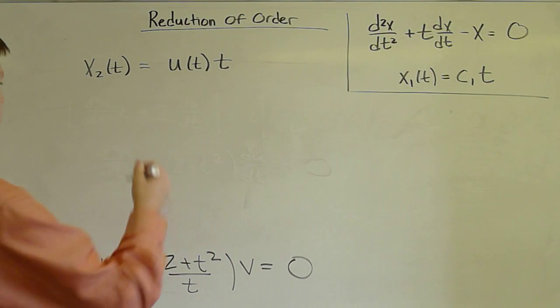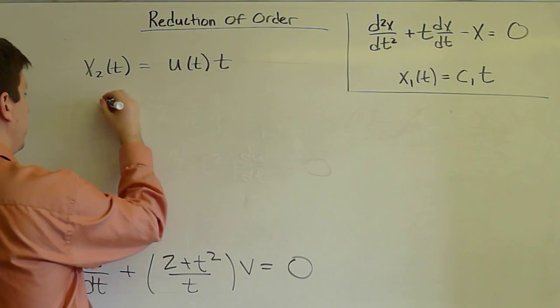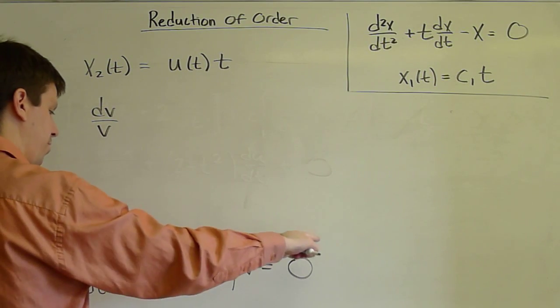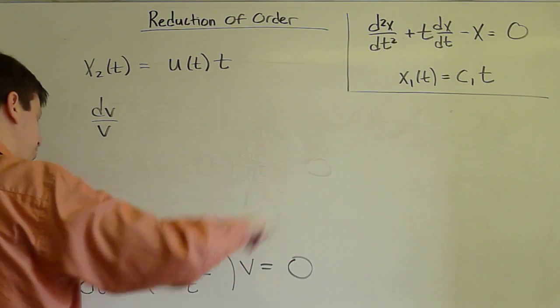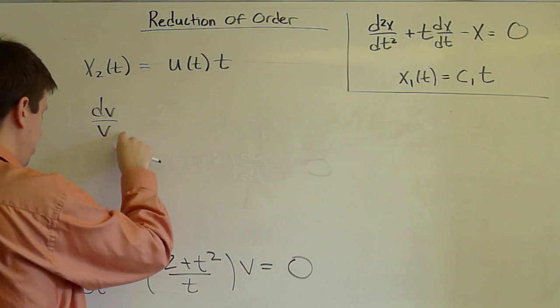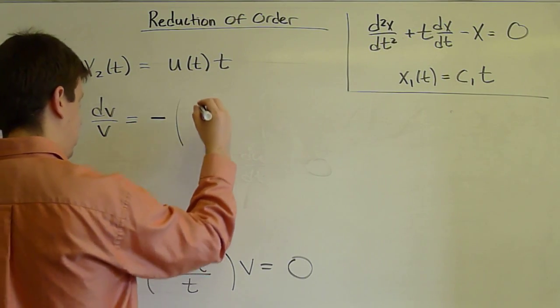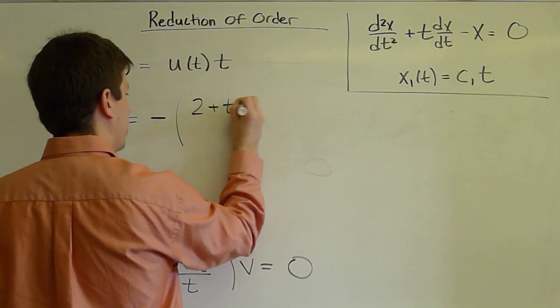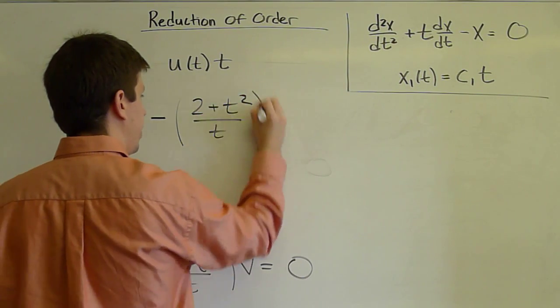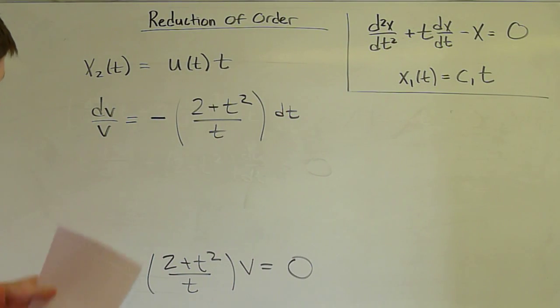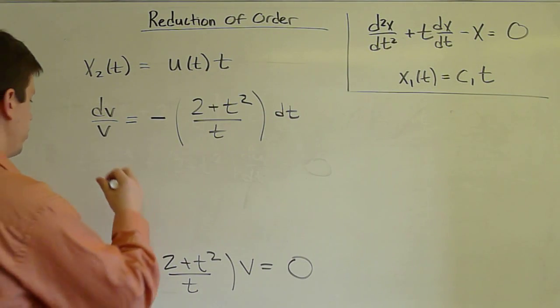That will give us, by separation, dv over v. I'll take this over on the other side with a negative sign. I'll divide by v. I get dv/v. And on the other side, I'll have negative (2 + t²)/t dt. This is now separated. All the v's on the left, all the t's on the right. We can integrate both sides.